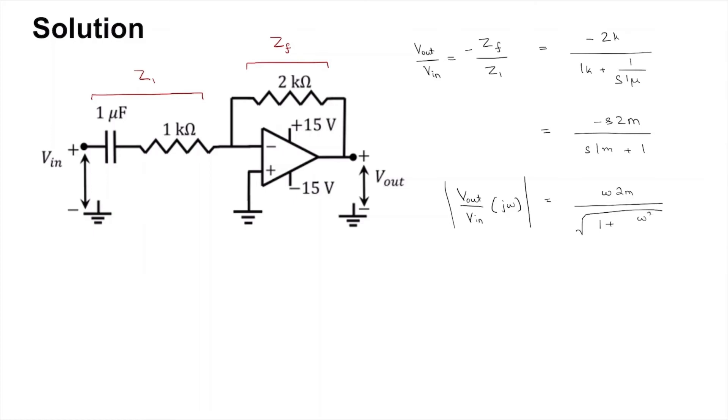You will get that this is equal to omega times 2m divided by square root of 1 plus omega squared by 1k squared. This is clearly a high-pass filter transfer function.